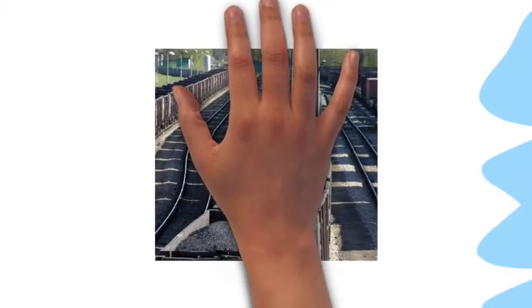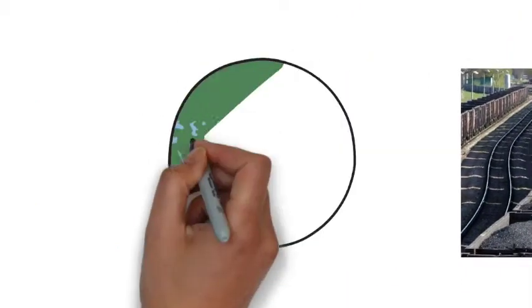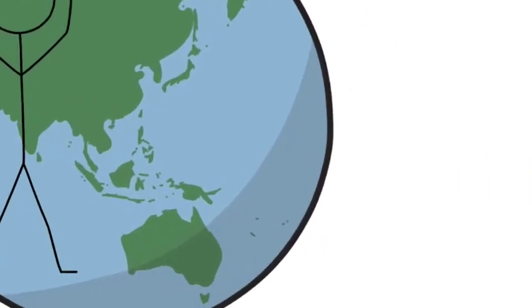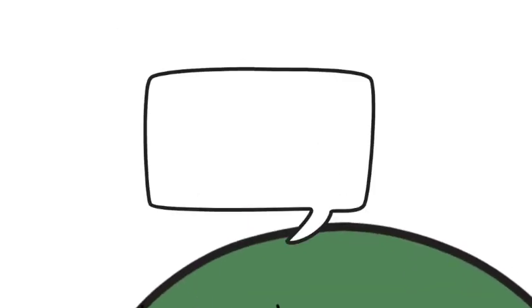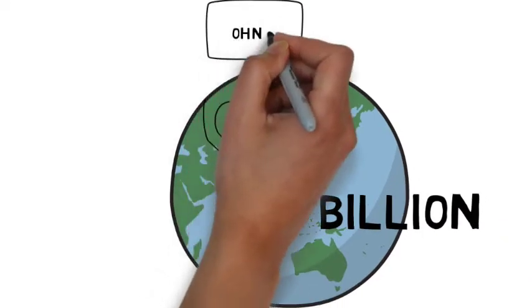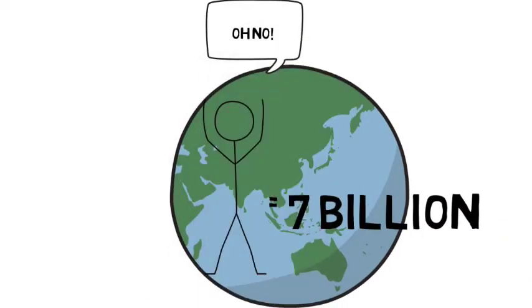And those fossil fuels that they were so reliant on? Guess what? With 7 billion people now occupying the stage, they were also starting to run out of it. Humans needed to reduce emissions, but also fulfill the energy needs of the planet and make them renewable.